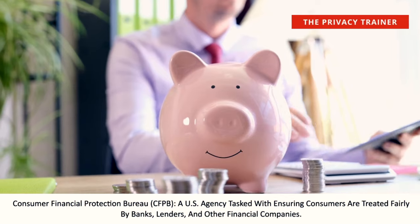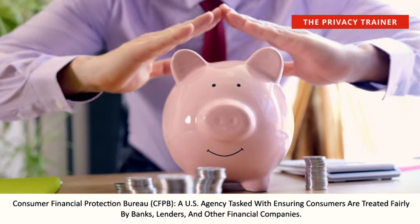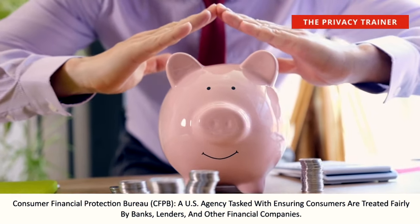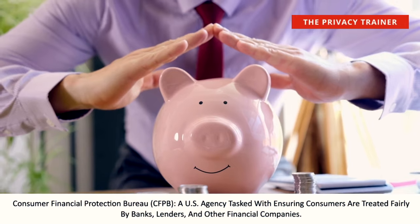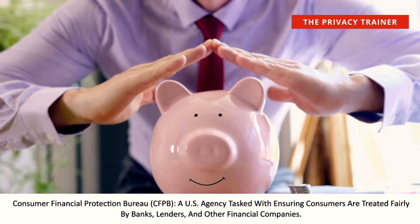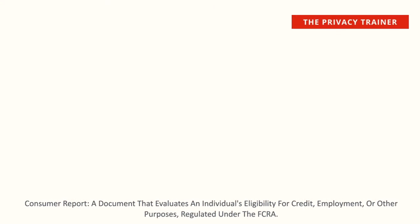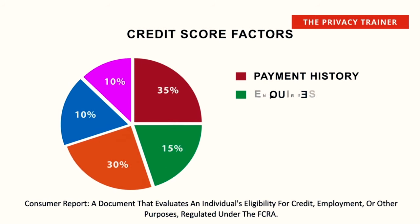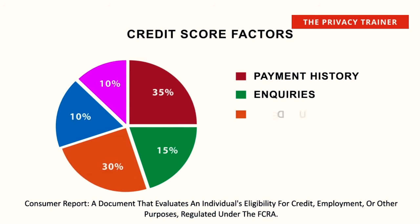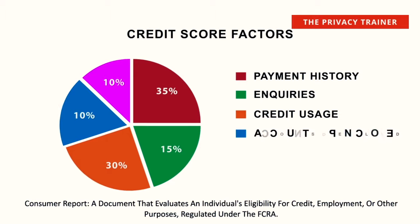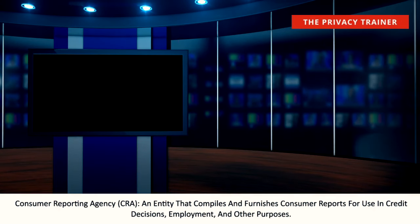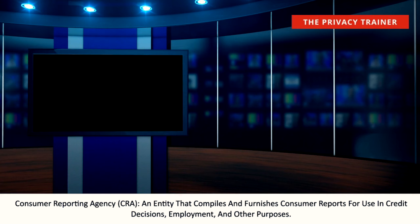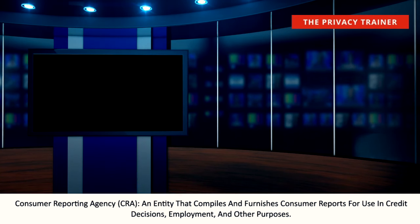Consumer Financial Protection Bureau, CFPB. A U.S. agency tasked with ensuring consumers are treated fairly by banks, lenders, and other financial companies. Consumer Report. A document that evaluates an individual's eligibility for credit, employment, or other purposes, regulated under the FCRA. Consumer Reporting Agency, CRA. An entity that compiles and furnishes consumer reports for use in credit decisions, employment, and other purposes. Consumerization of Information Technology, COIT. The trend of adopting consumer technology within corporate environments, influencing IT policies and privacy.